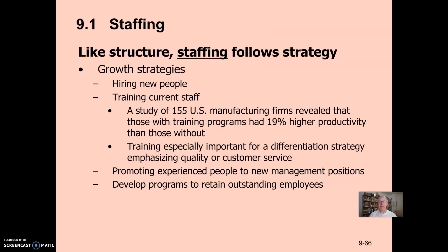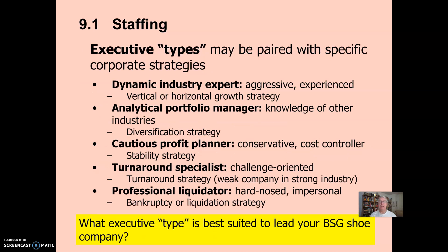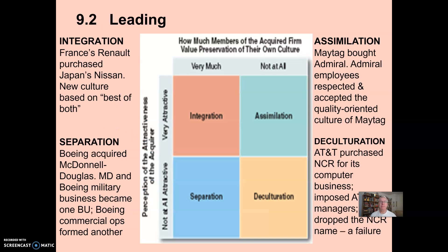When it came to staffing and leading for action, staffing follows strategy. With growth strategies, you're hiring people and training current staff. With retrenchment strategies, you're often laying off people and must develop criteria for doing that effectively. Different leadership types are often best for different strategies. Retrenchment causes problems — while downsizing may reduce costs, it can have a damaging effect on the company in the long run. Similar things can happen with takeovers, and we looked at a model on how to manage running as separate companies or integrating two companies together.